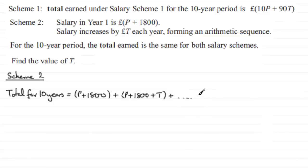This continues until we get to the last term. The amount in the tenth year is going to be P plus 1800 plus 9T. I know it's 9T because in the second year it's 1T, in the third year it's 2T, and so on. In the tenth year, it's always one less than the year you're on, so 9T.